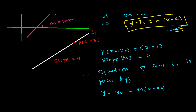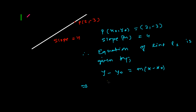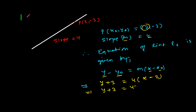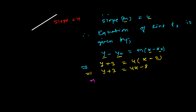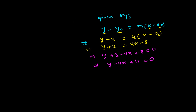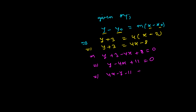Plugging in the values: y0 is -3, so it becomes y + 3; m is 4; and x0 is 2, so it becomes x - 2. We get y + 3 = 4(x - 2), which gives y + 3 = 4x - 8. Rearranging: y + 3 - 4x + 8 = 0, so y - 4x + 11 = 0, or equivalently 4x - y - 11 = 0. This is the required equation of the line passing through (2, -3) with slope 4.